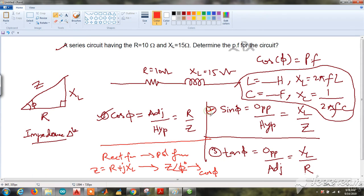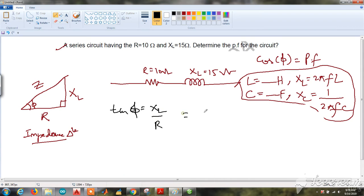So either we can use one, two, three, or this method. Now let's take any one method to solve this. I will be taking tan φ = XL/R, that is 15/10.